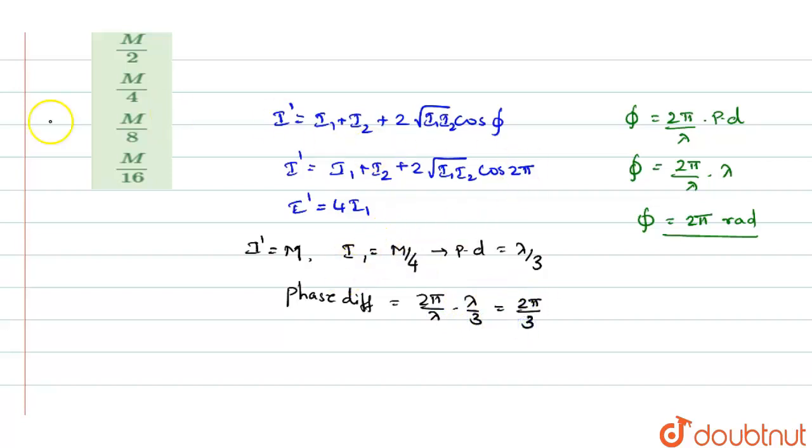So in this again, we shall substitute back with this equation, the intensity equation. And so I becomes equal to I₁ plus I₂ plus 2 into root I₁ into I₂ cos 2π by 3.